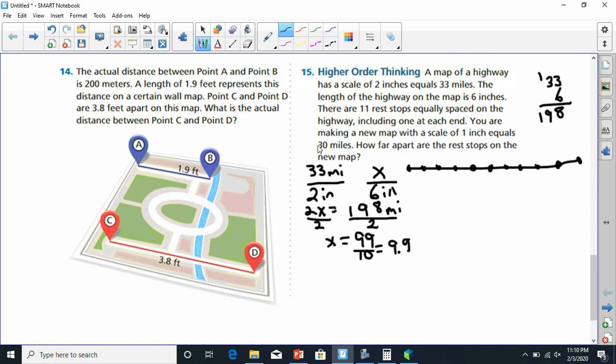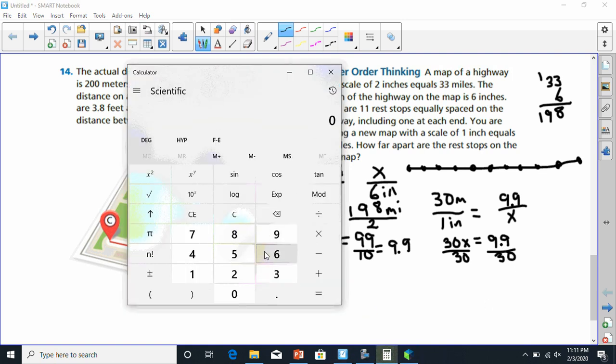Now it says I have 1 inch equals 30 miles. So if 1 inch is equal to 30 miles, and we're putting 9.9 miles here, and we're trying to find out how many inches. So this is going to be 30 times x has to be equal to 1 times 9.9 is 9.9. And now I've got to divide 30 away. Whenever I divide from one side, I divide from the other. And now I have 9.9 divided by 30. And if I take 9.9 and divide it by 30, that gives me 0.33 or 3 repeating.